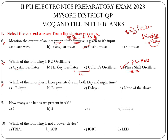Question 8: Which ionospheric layer persists during both day and night? The layer which persists during both day and night is the F layer. During daytime it splits into two layers — F1 and F2, also called the Kennelly-Heaviside and Appleton layers. During night, they merge back into one F layer.